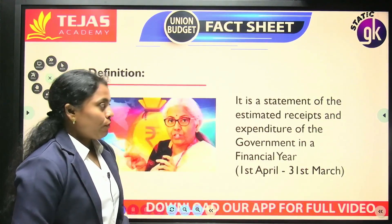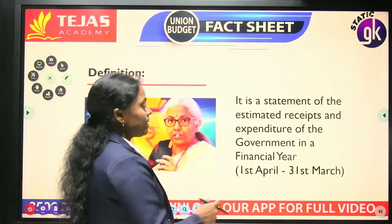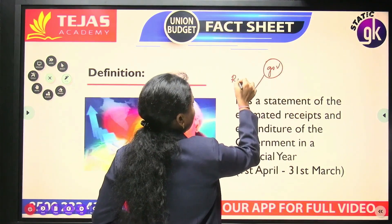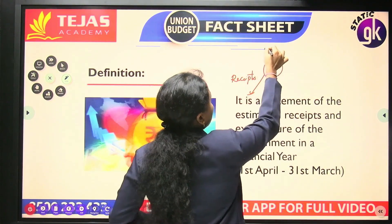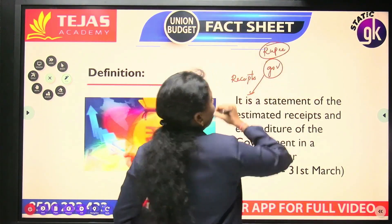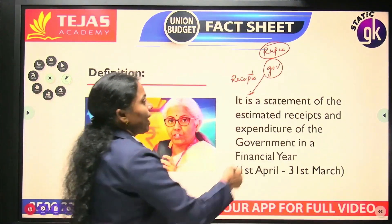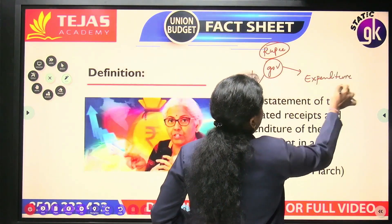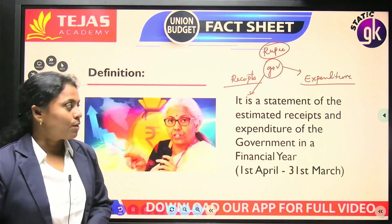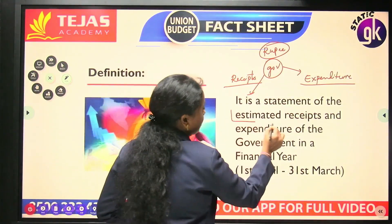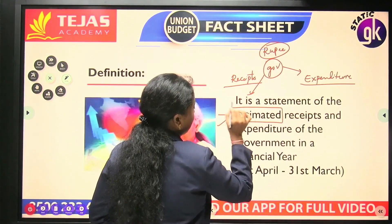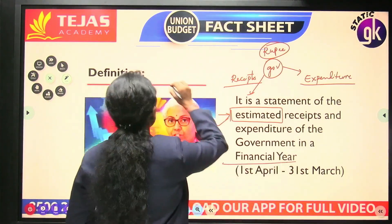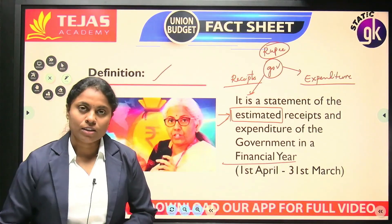The budget is a statement of receipts and expenditure of the government in the financial year. The government will have two functions: the government is going to receive — those are called receipts — and the government will also spend in the form of expenditure. So in an annual year, what is the estimated revenue of a government and what is the estimated expenditure? These estimates of receipts and expenditure by the government for the financial year is called the budget. That is the definition of a budget in simpler terms.